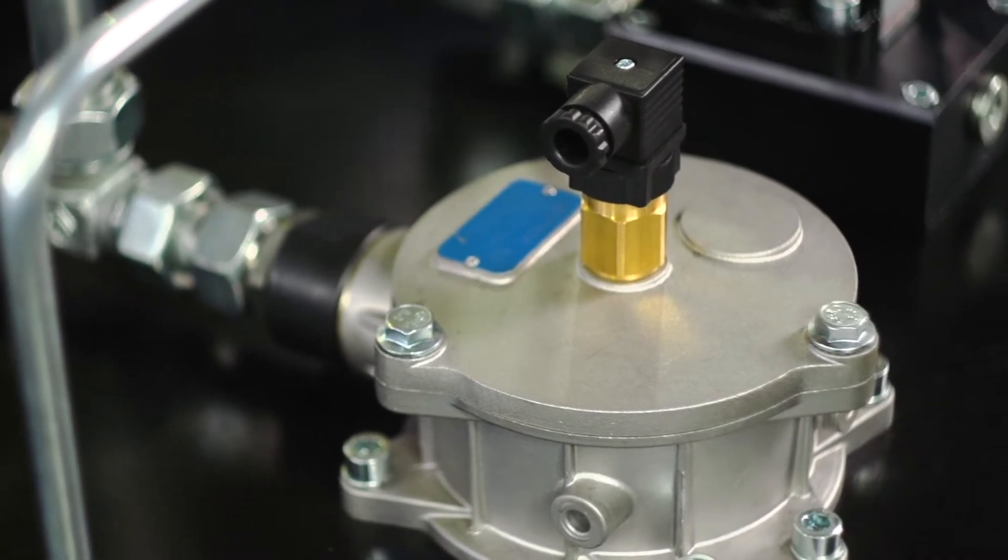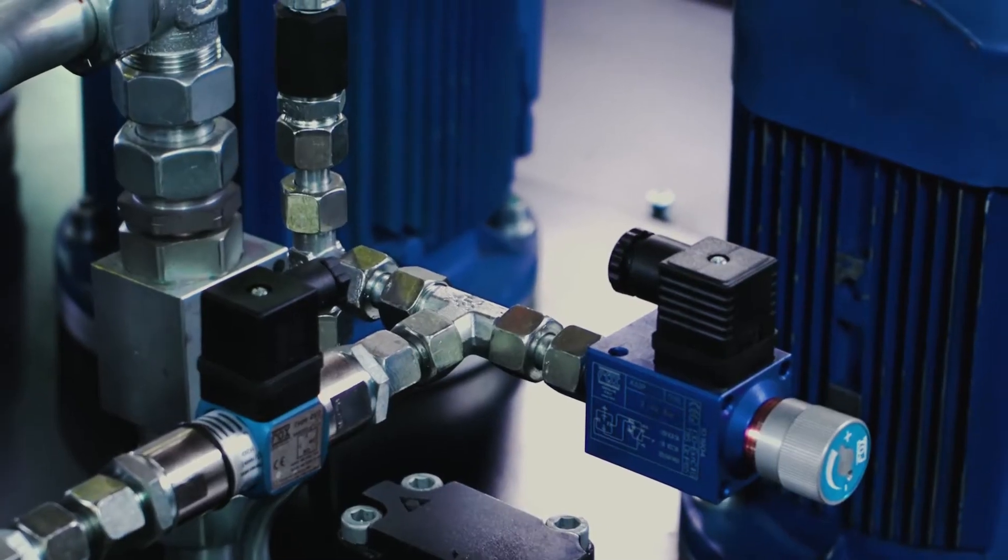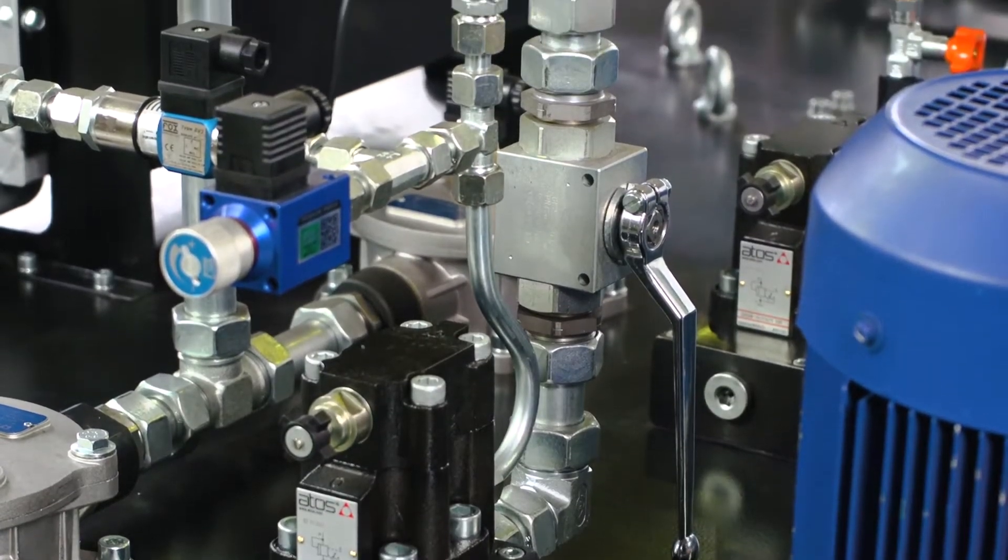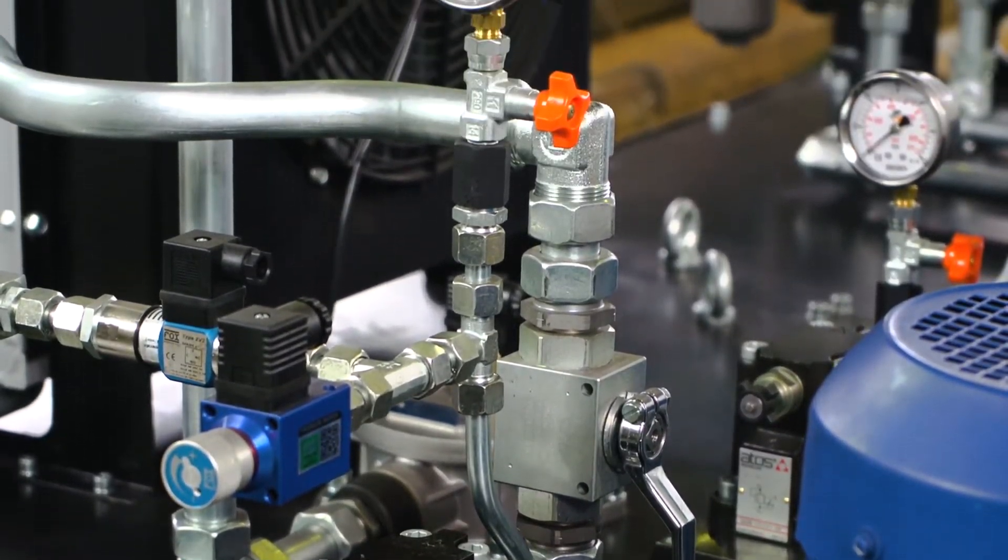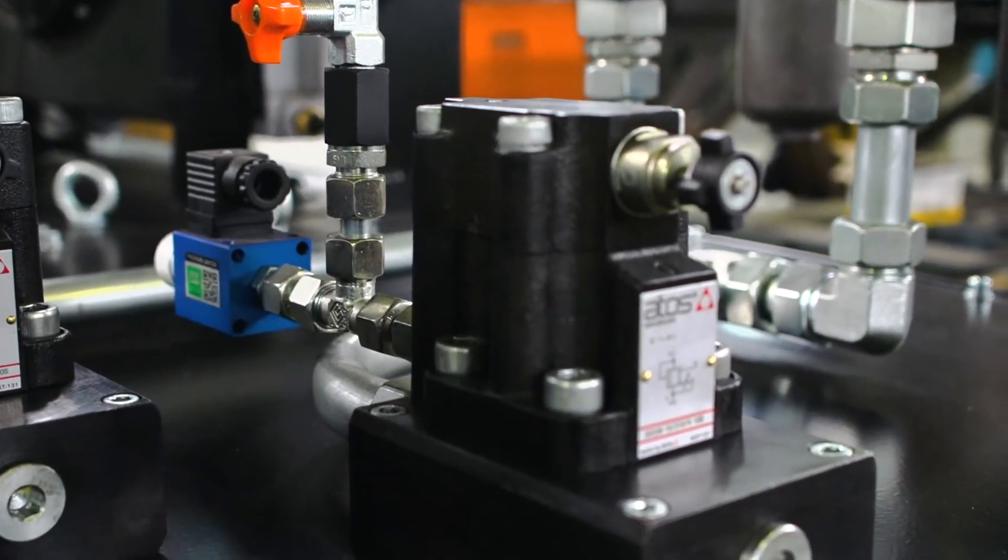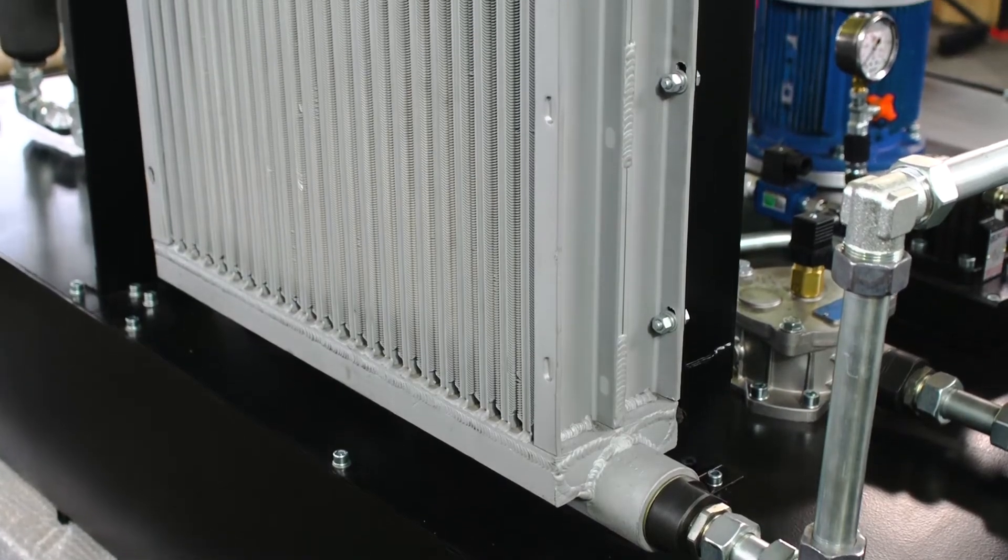The power pack is equipped with a control system of pressure and level as well as temperature regulation system of the power fluid. For this it has pressure, level and temperature transmitters and executive units such as oil cooler and tubular heating elements for successful operation.